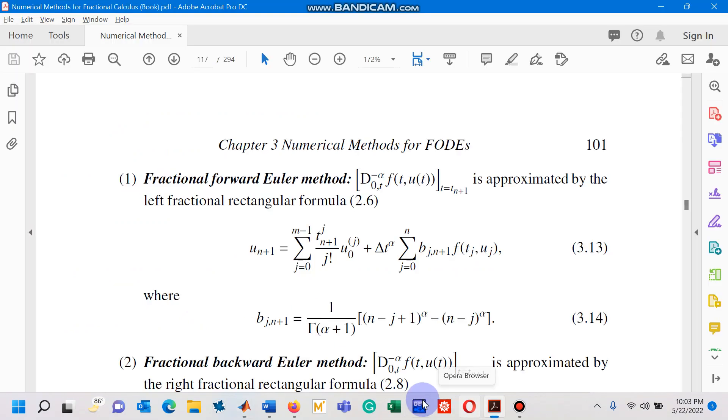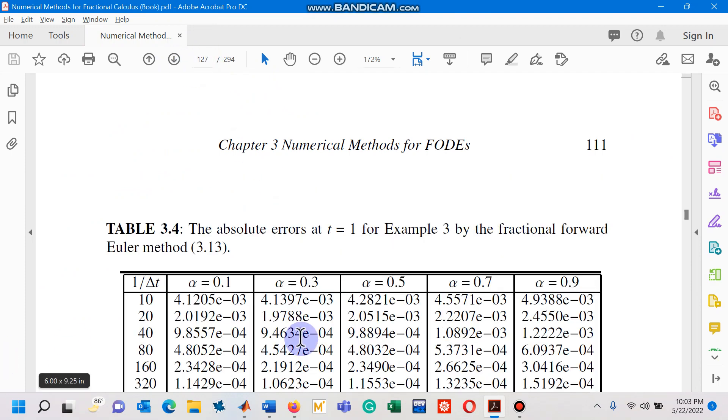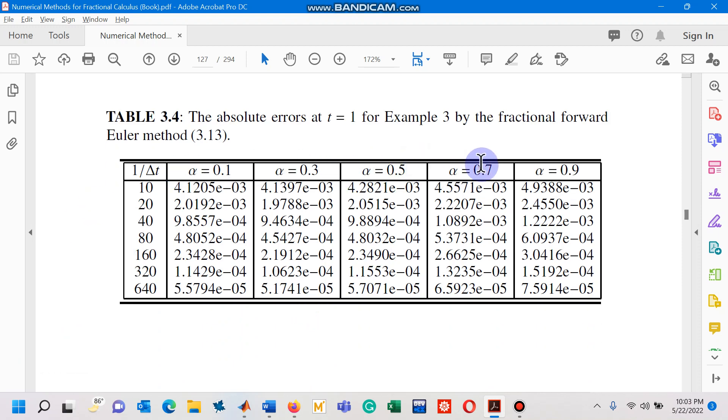You can see in the book as well, on page number 127, by choosing different fractional orders and different step sizes the absolute errors at the final mesh point are given.